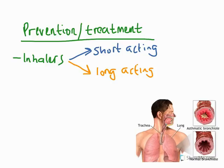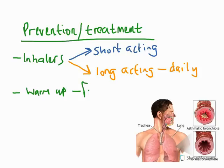The brown inhalers are what we call preventative inhalers. They actually ensure that the bronchi remain open at all times and are used daily — usually morning and night — as a preventative way of making sure an asthma attack will not occur. In an athletic sense, one really important thing is to do a warm-up. Rather than going from an inactive to a very active state, warm-up should be progressive so we're less likely to suffer an asthma attack.